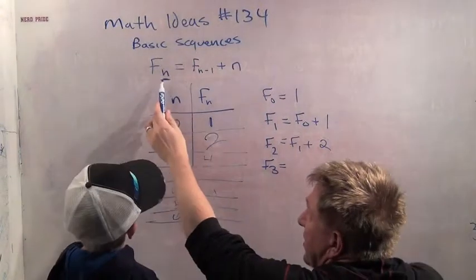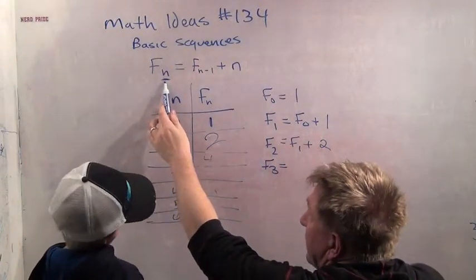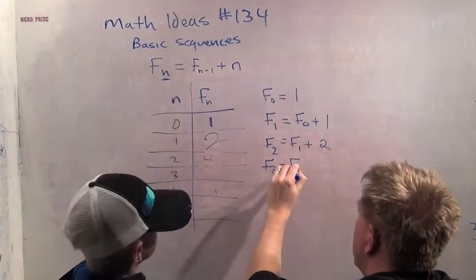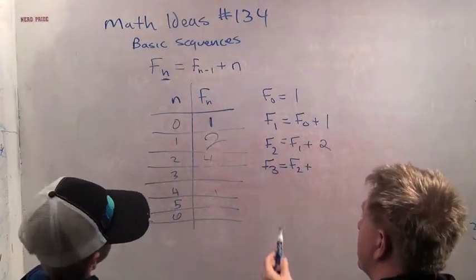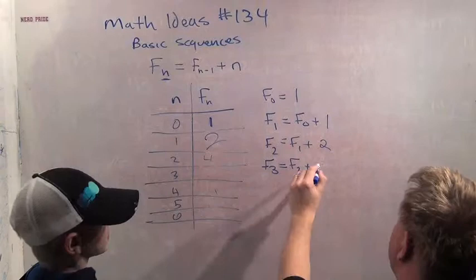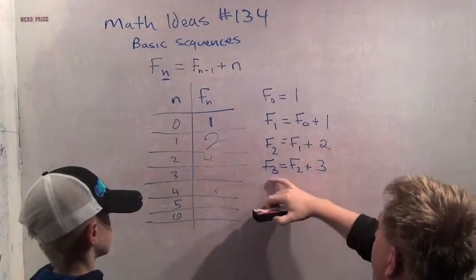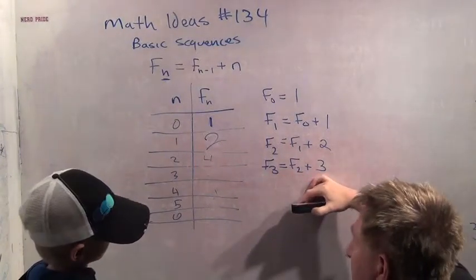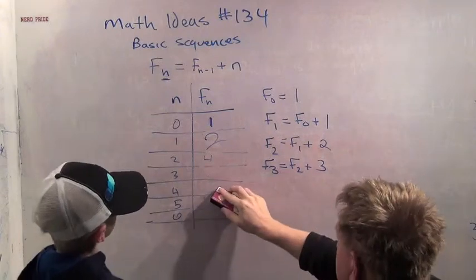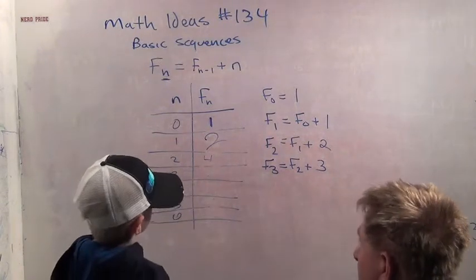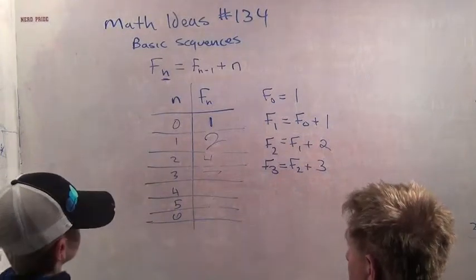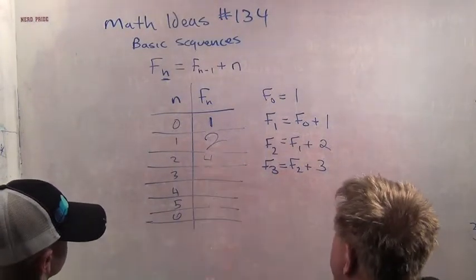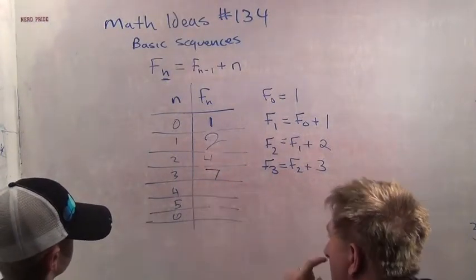F3 equals... This time n equals 3. F3 equals F2 plus what? Plus n. What is n in this case? It's 3. Right. F3 equals F2 plus 3. What is F2? F2 is 4. That's 7. Very good.